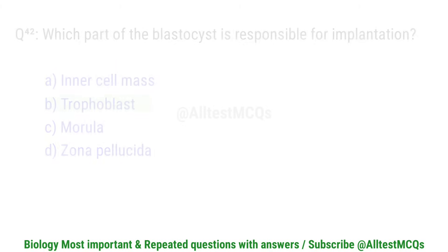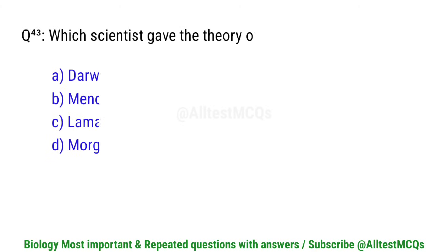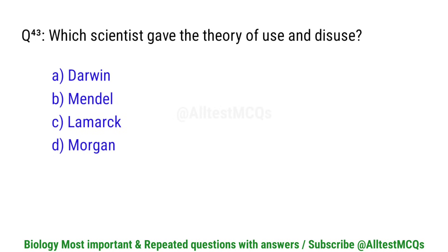Question number 43. Which scientist gave the theory of use and disuse? Right option is C. Lamarck.